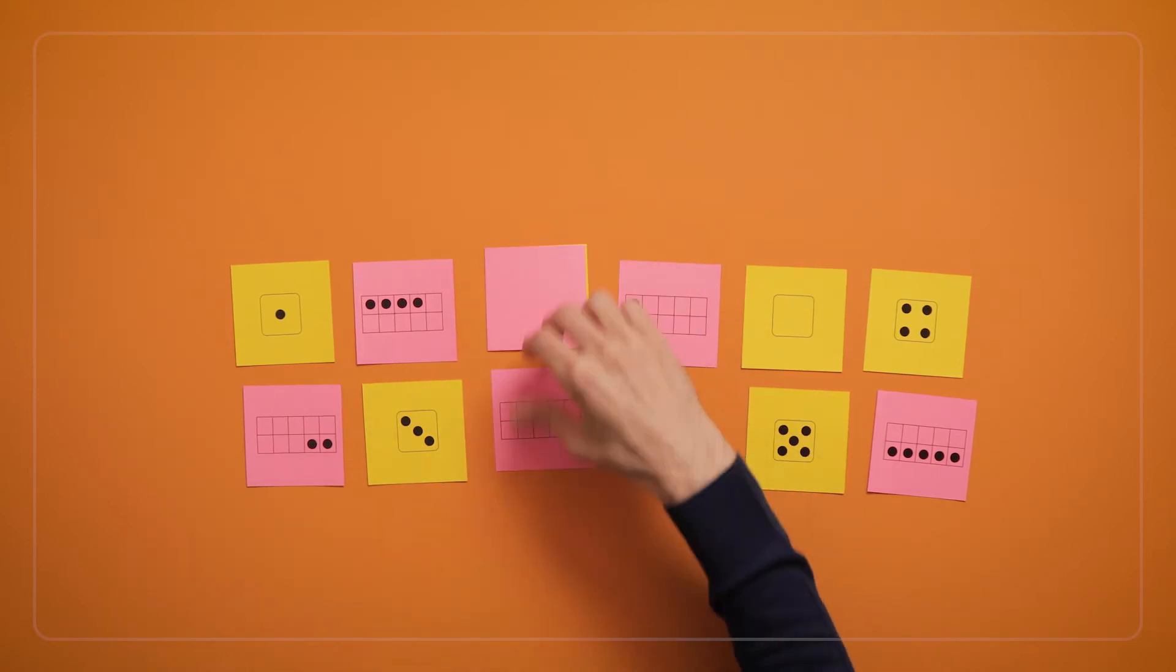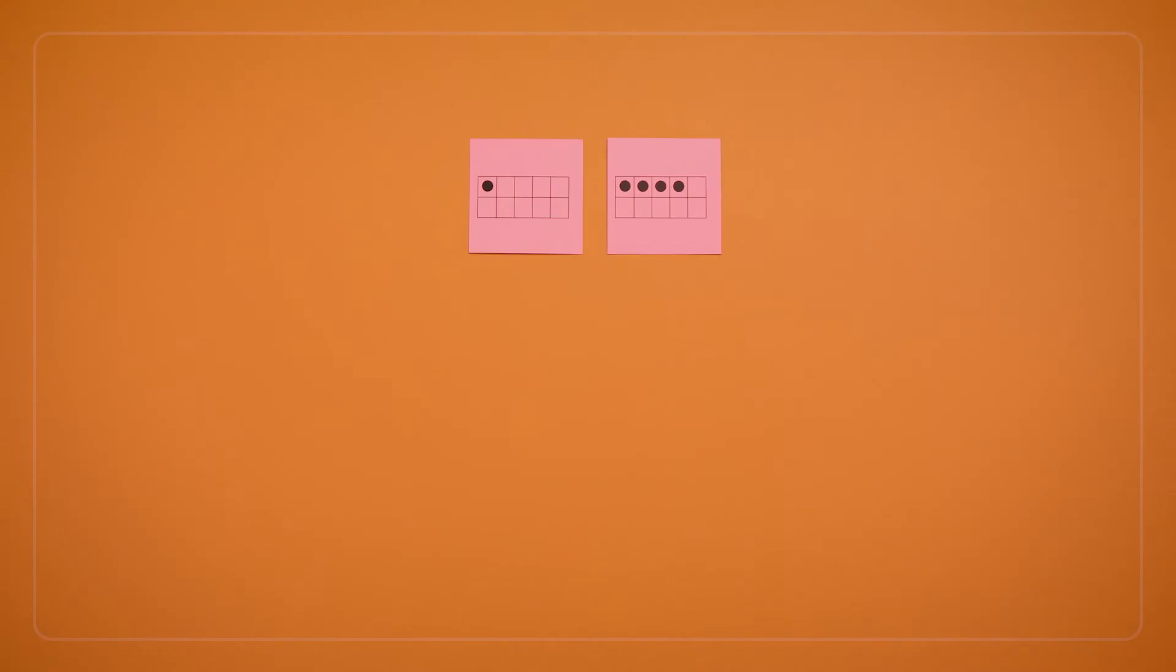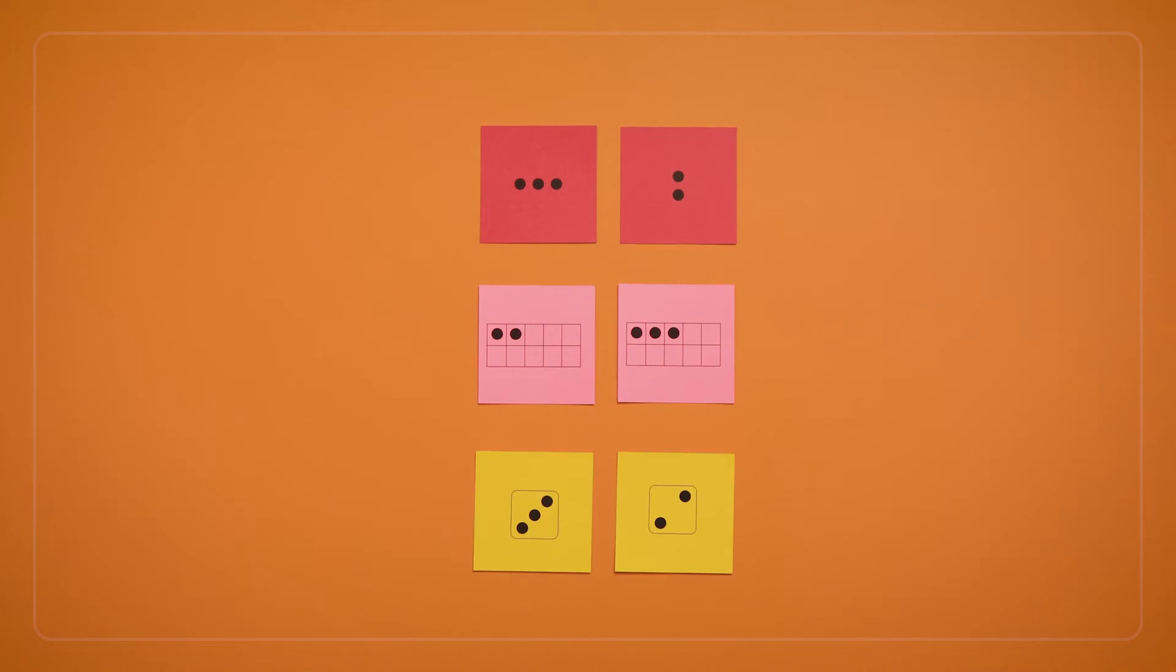The special learning in this game is that numbers can be composed or made in different ways. Eventually, children learn that 1 and 4 always make 5, regardless of order, as do 2 and 3, and 0 and 5.